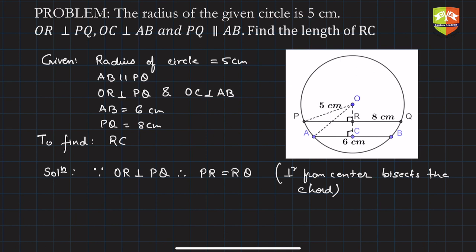Similarly, OC is perpendicular to AB, therefore AC will be equal to CB. You can add one more information: it is 4 centimeters here and 3 centimeters there.